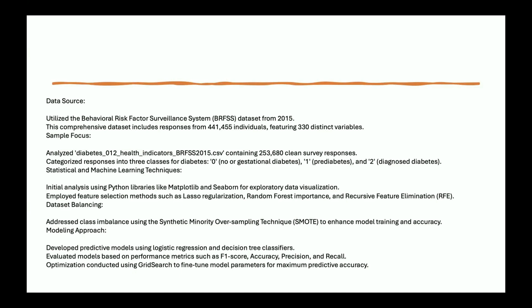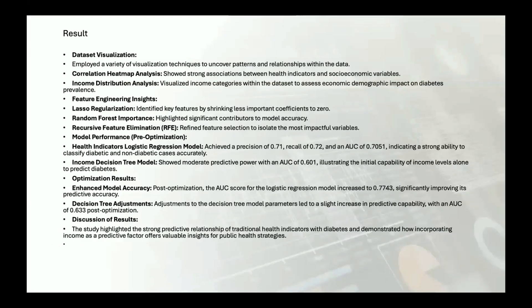To solve this, we used oversampling techniques like SMOTE, which helps make our model more generalizable and applicable. Each of these steps was essential to ensure our models are both effective and insightful. After handling the imbalances, we developed predictive models using logistic regression and decision trees, and then evaluated and optimized them, which I will explain more in the next slide.